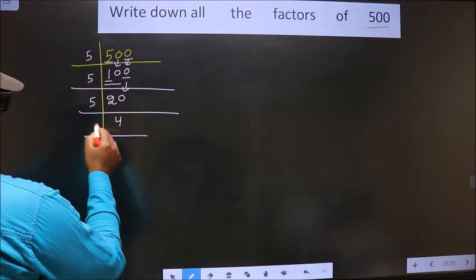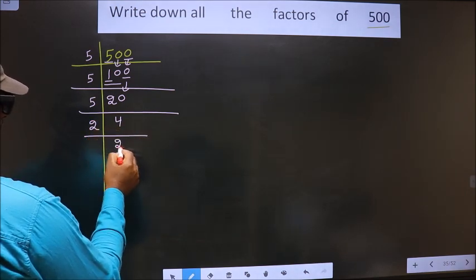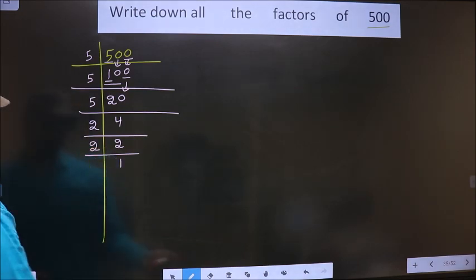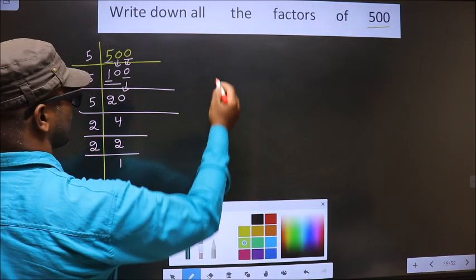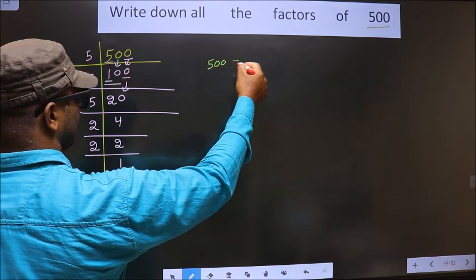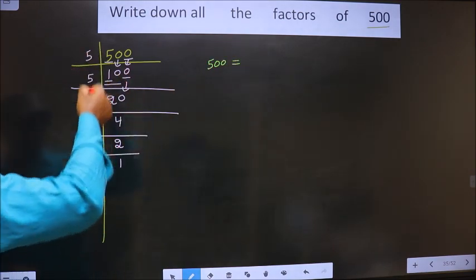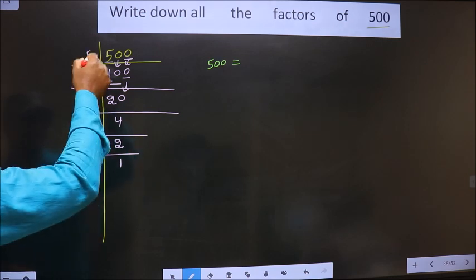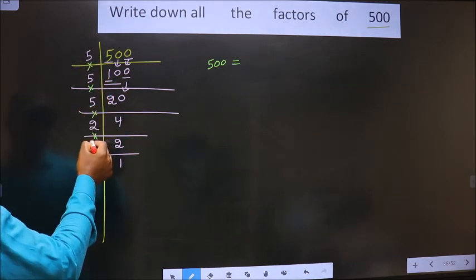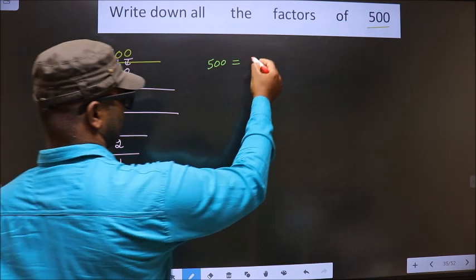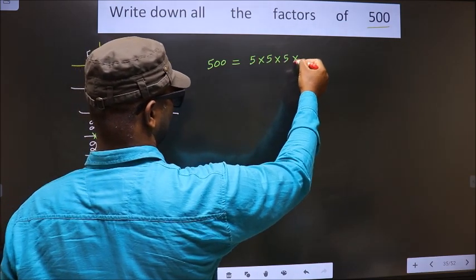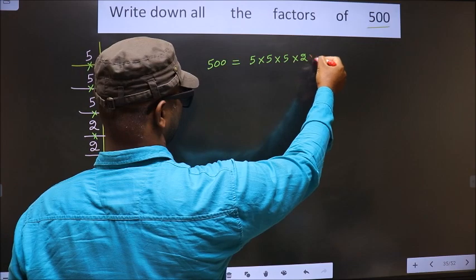Now we have 4, which is nothing but 2 twos. And 2 is a prime number, so 2 ones is 2. So 500 is equal to the product of these numbers: 5 × 5 × 5 × 2 × 2.